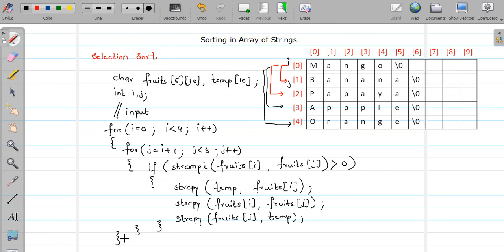If you want to do a sorting in descending order, in that case you have to just reverse this sign. You have to say less than zero. So let us see the practical implementation and execution of this in Code Blocks.